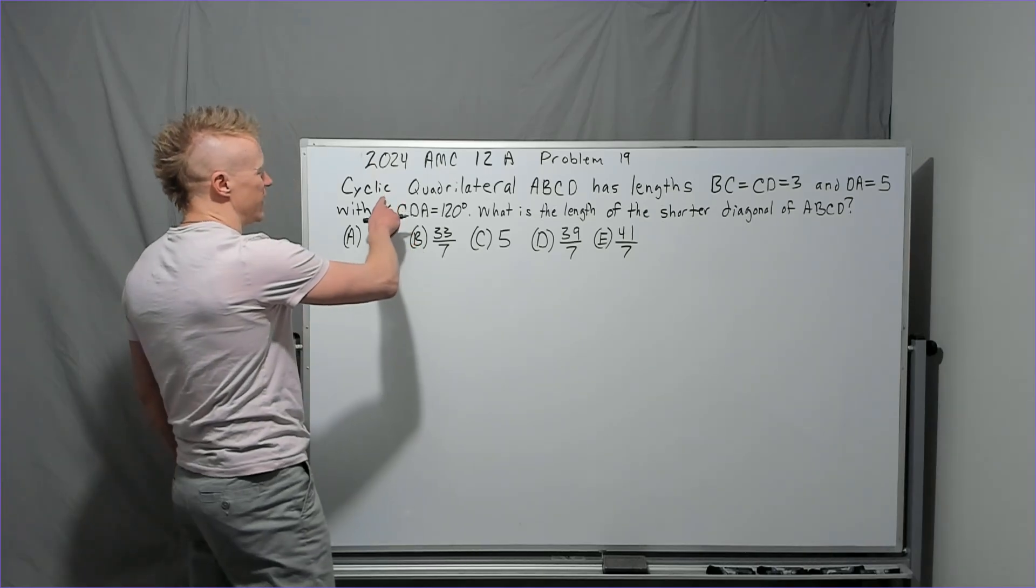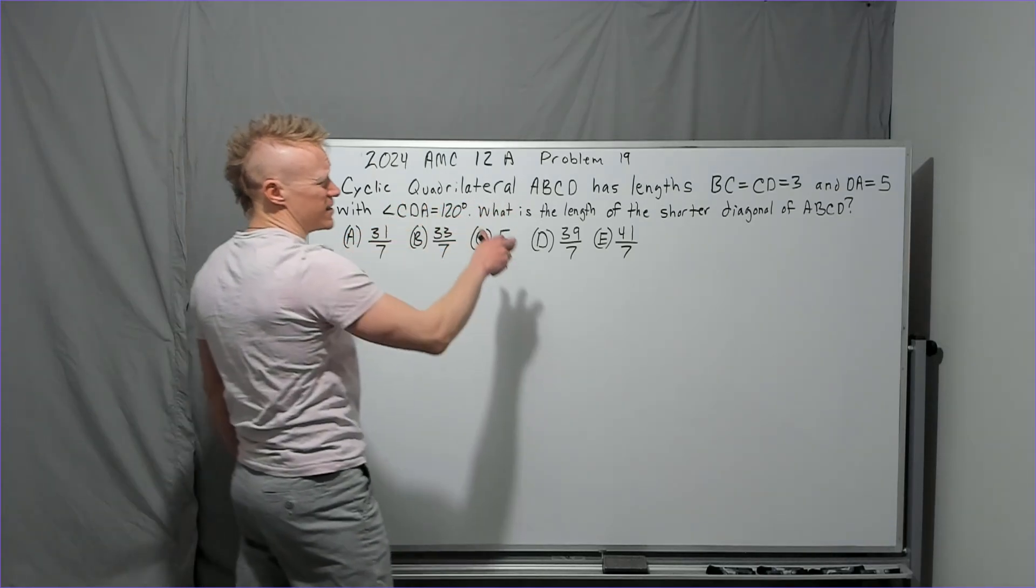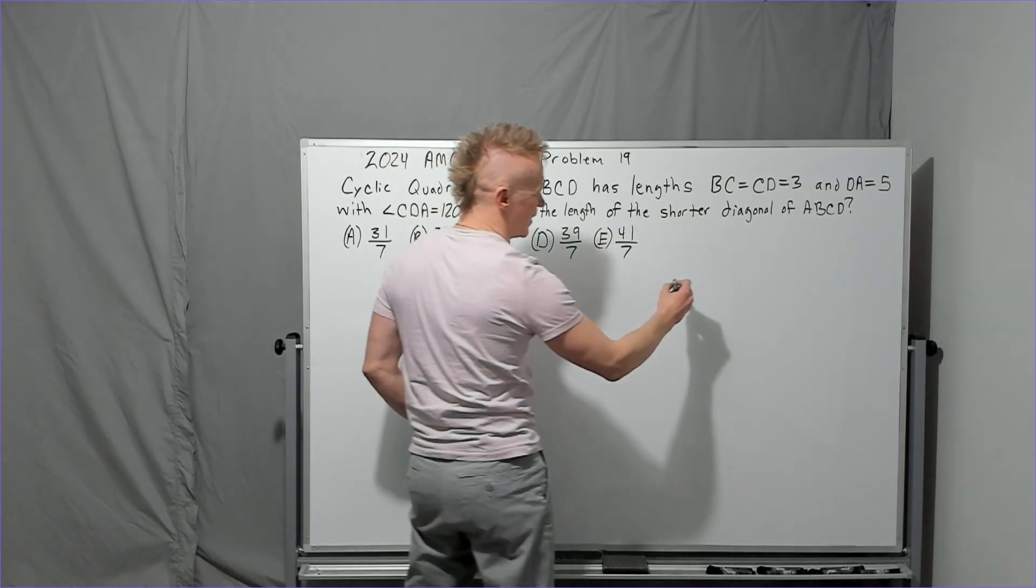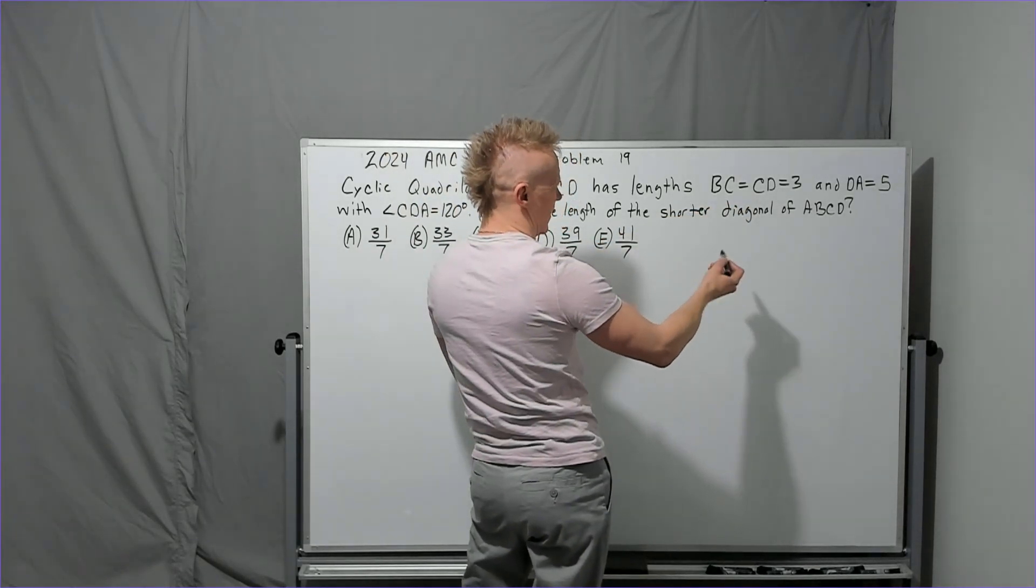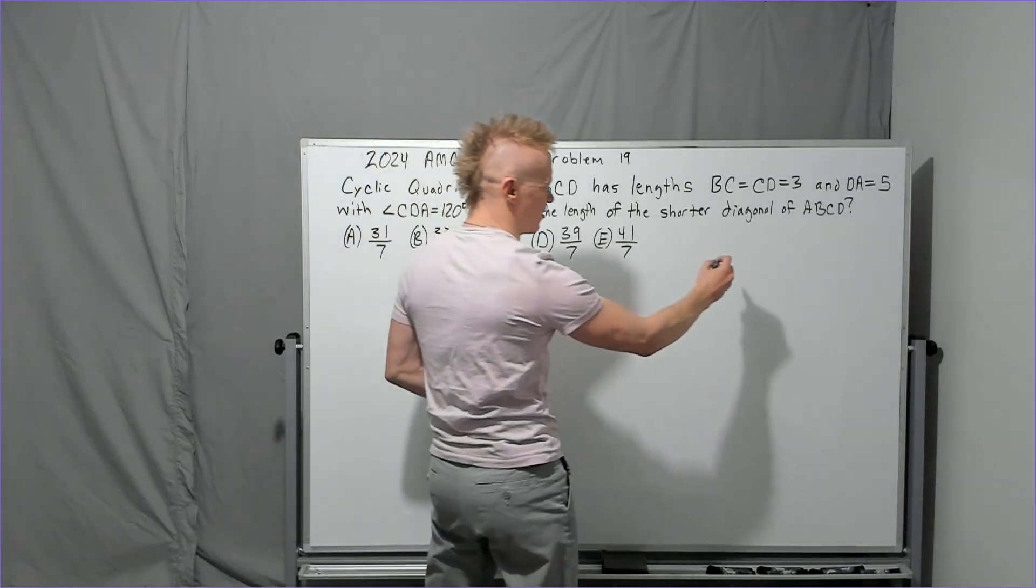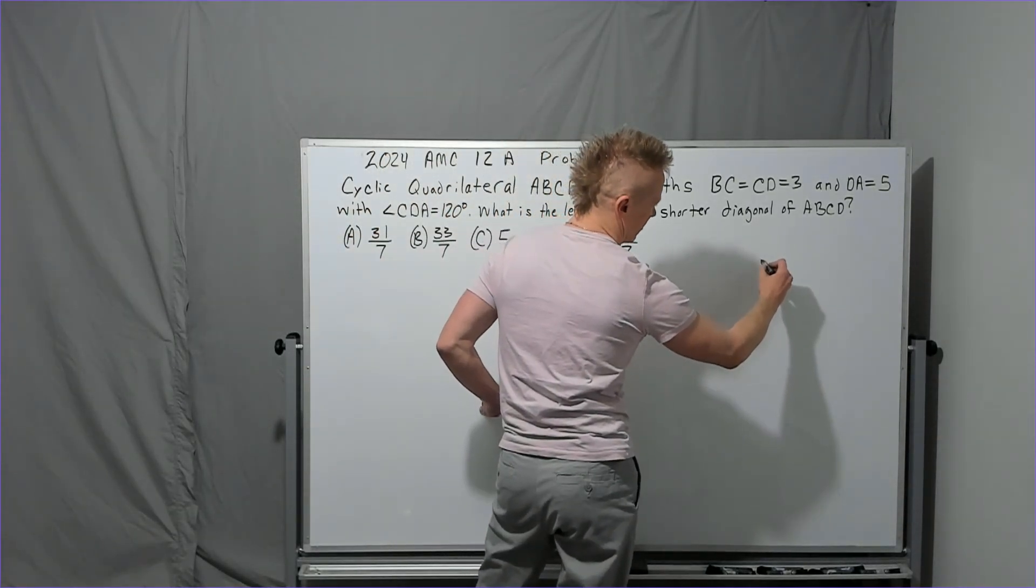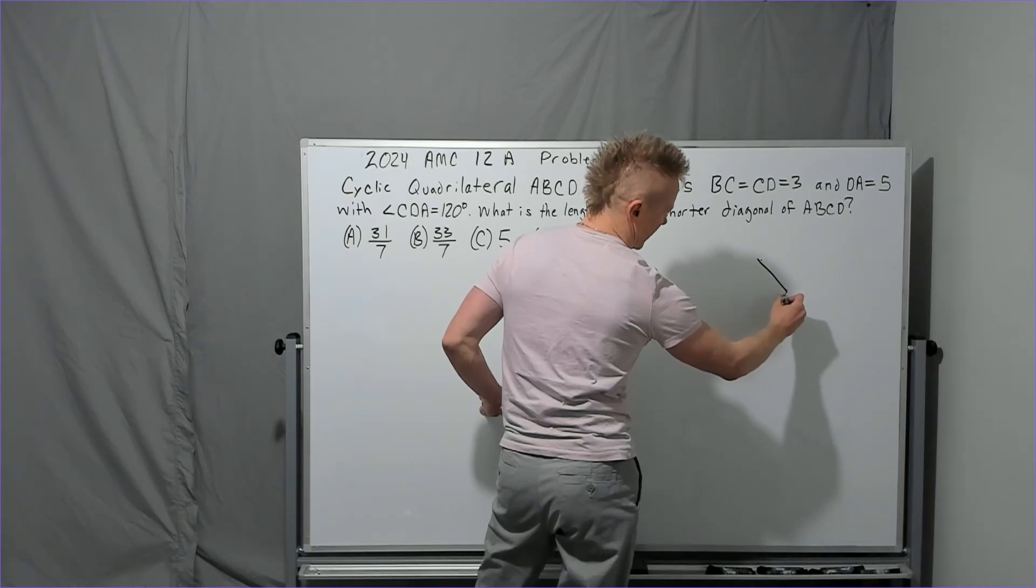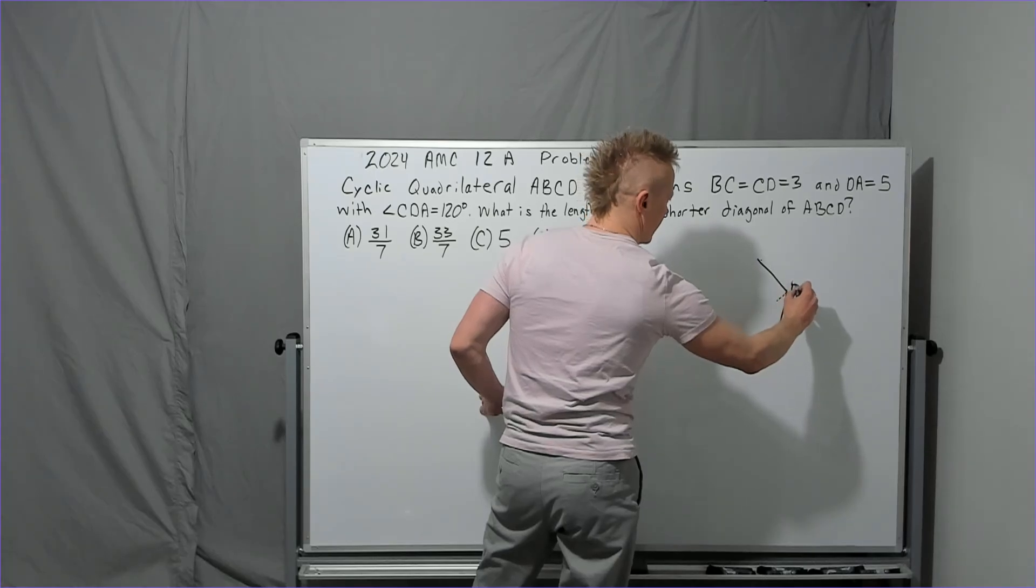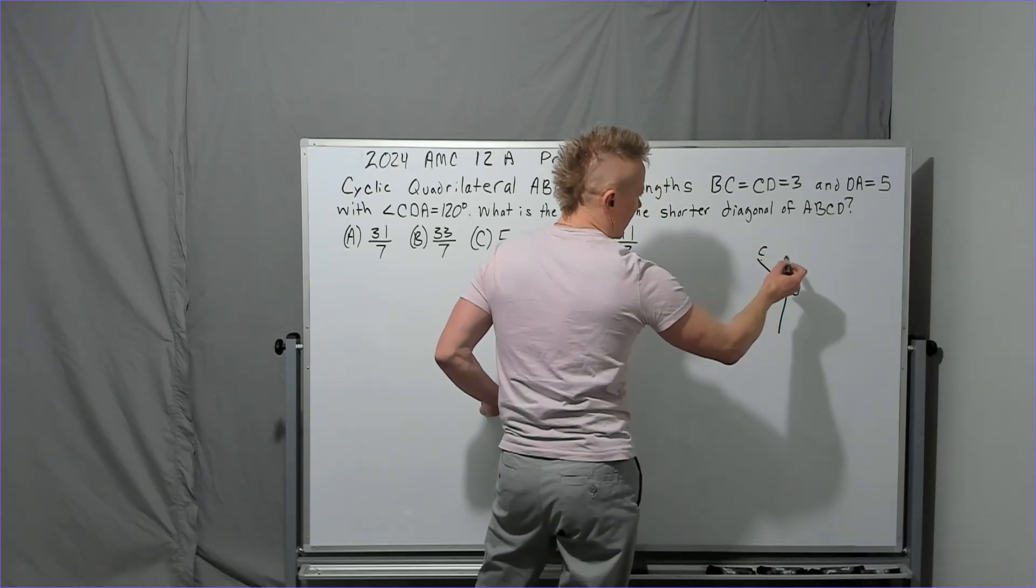Let's get a look at this one. Cyclic quadrilateral ABCD has lengths BC equal to CD equal to three. You know, how does that look? We don't really know. We got an angle of 120. Let's start with that. So some angle maybe approximately 90 is here. So maybe like here, there will be D and we'll call this C.